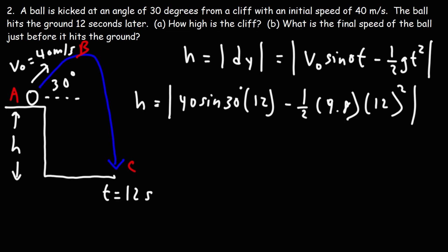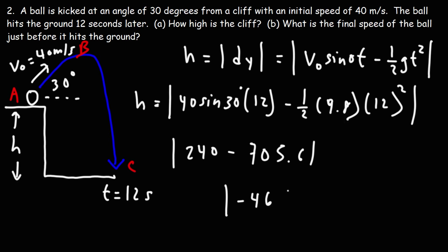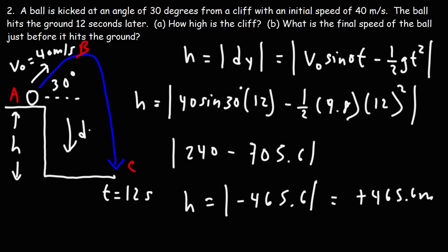Sine 30 equals one half, so half of 40 is 20, and 20 times 12 is 240. 12 squared is 144, half of that is 72, times 9.8 is 705.6. So 240 minus 705.6 is negative 465.6. The vertical displacement dy is negative 465.6, but because we want the height of the cliff we make it positive. It makes sense that dy is negative because going from A to C you're moving downward. The answer for part A is positive 465.6 meters — that's how high the cliff is.